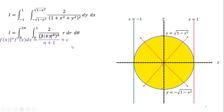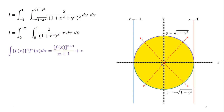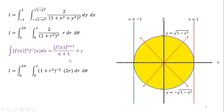After this, we make some simplification. To integrate, we use the power rule formula: if a function is raised to a power and the derivative of the inner function is available as a multiplier, we integrate as f(x) to the power n plus one, divided by n plus one. We convert the integral into this form by shifting the denominator to the numerator. The derivative of one plus r square is 2r, which is available as a multiplier, so we can apply this formula.